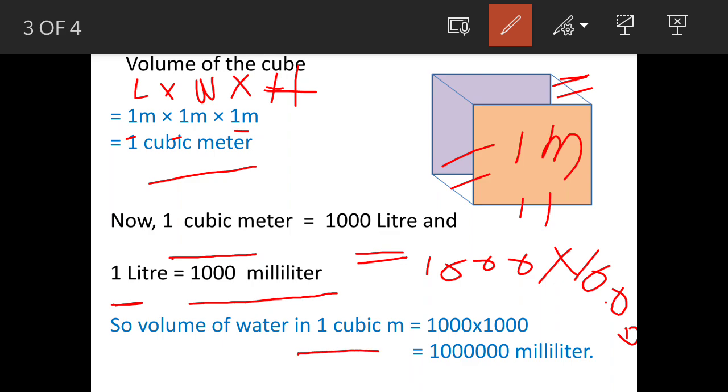So 1 cubic meter will be 1000 liters, and again multiply by 1000 you get milliliters: 10 lakh milliliters.